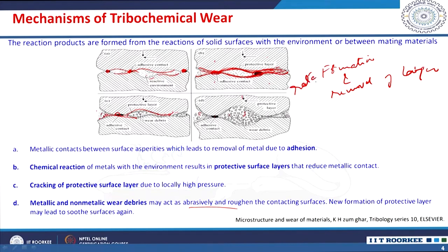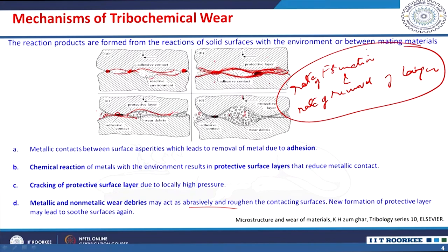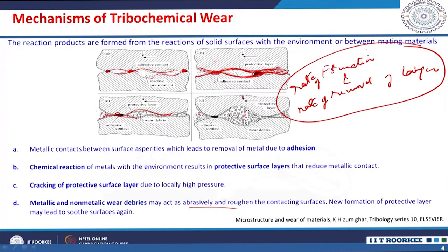The rate of formation or removal of this layer actually dictates whether the tribochemical wear is beneficial or not. If the rate of formation of the tribochemical layer is more than the rate of removal, then you have a protective surface and the wear is reduced. If the rate of removal is more than the formation, you have continuous material removal — the tribochemical wear is not beneficial and the formation of such layer is not protective.